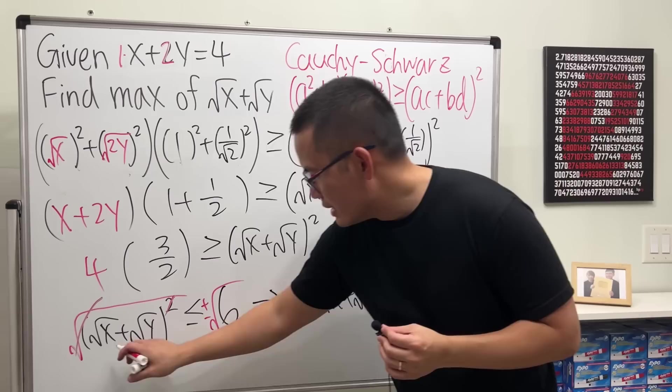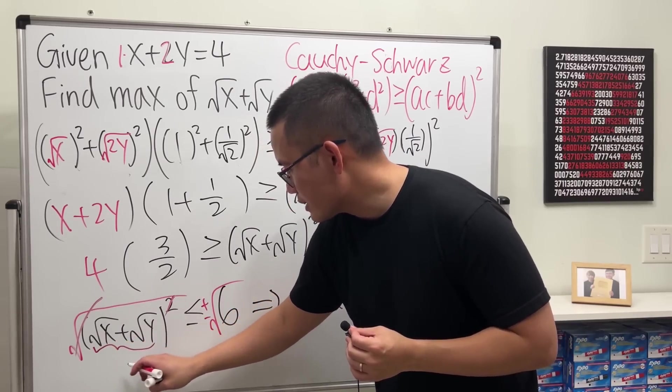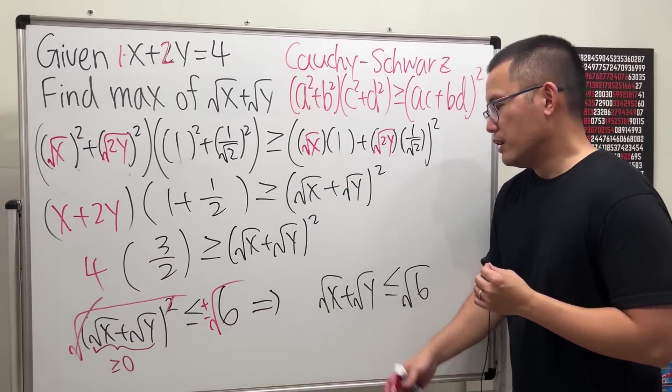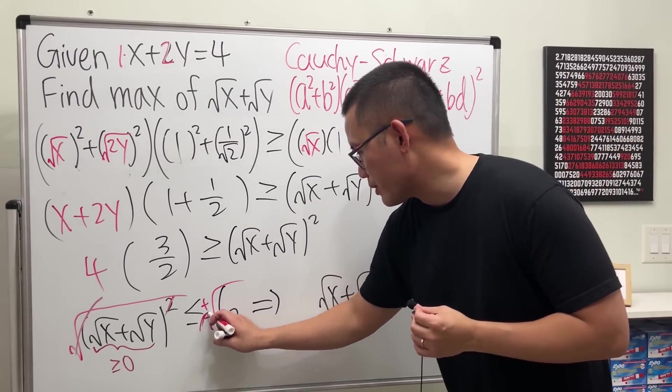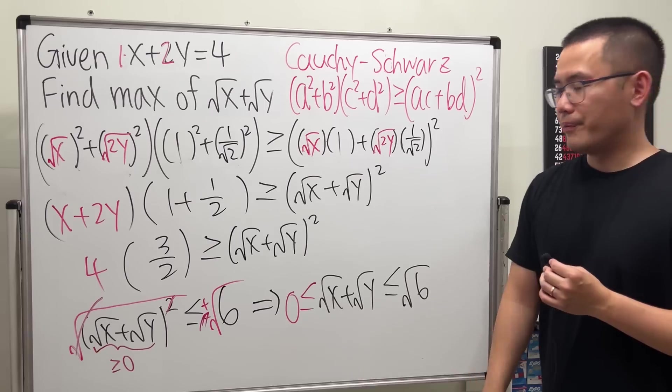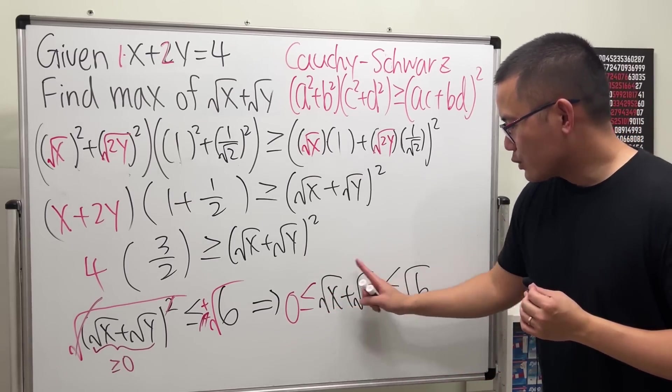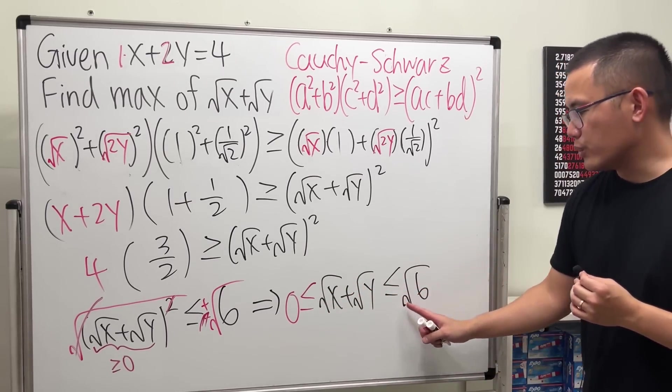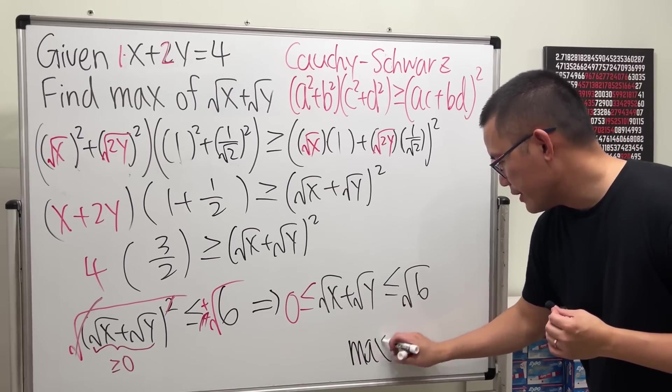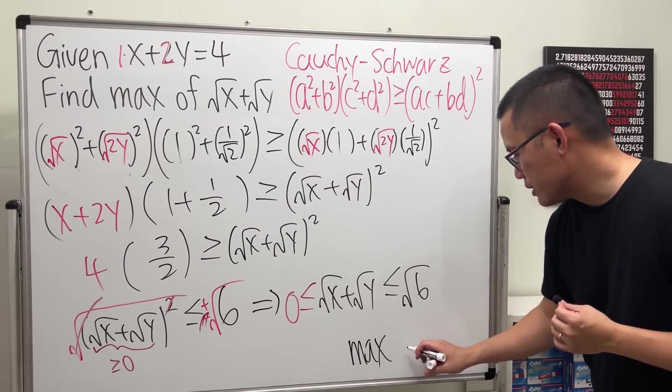But guess what? Square root of x plus square root of y is always greater than or equal to 0. So, we don't have to look at a negative number here. This is always greater than or equal to 0. Now, we have this quantity is always less than or equal to square root of 6. That means the maximum is going to be square root of 6.